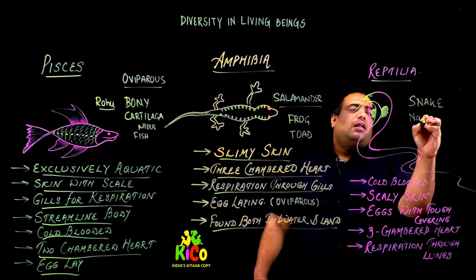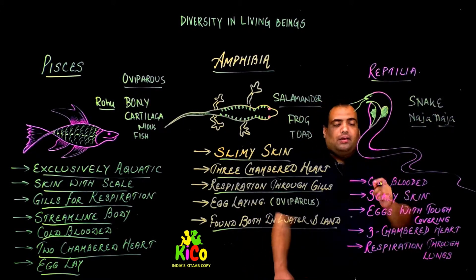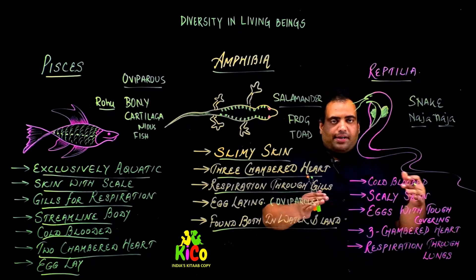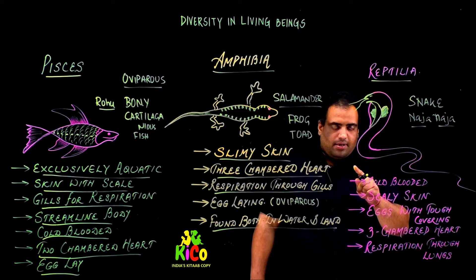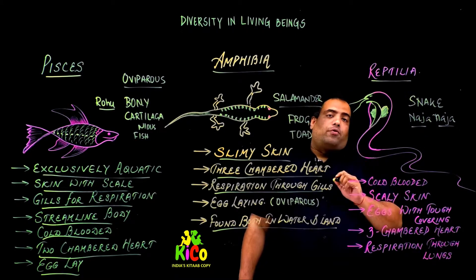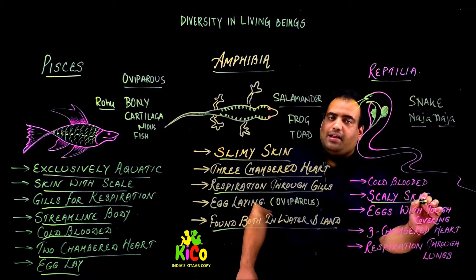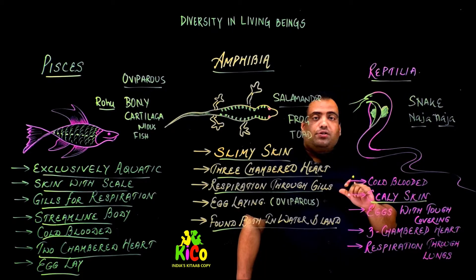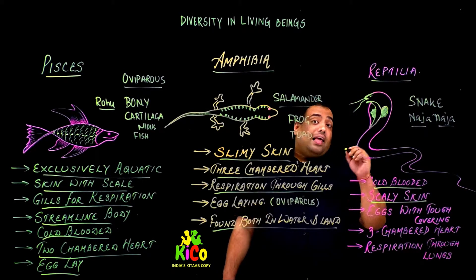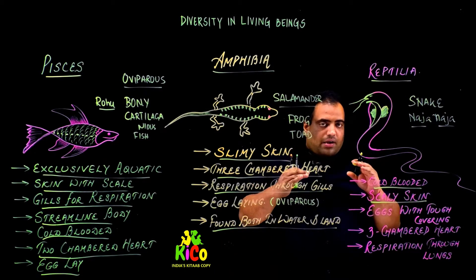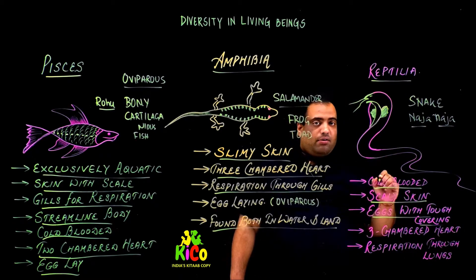Next is Reptilia, which is a more advanced category. They have scaly skin. Most reptiles have a three-chambered heart, except for crocodiles which have a four-chambered heart. They are also cold-blooded, meaning they cannot adjust their body temperature with the environment. They are oviparous but they lay eggs with a tough, hard covering, and unlike amphibians, they do not lay eggs in water.